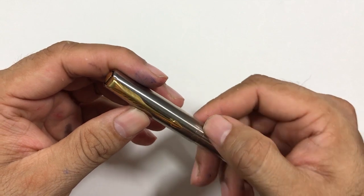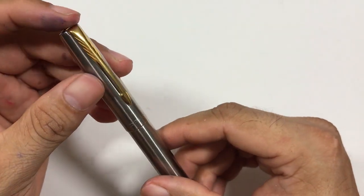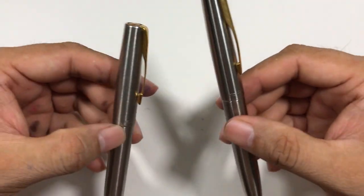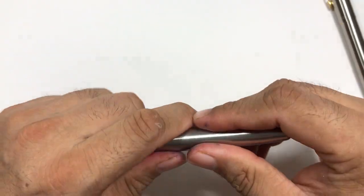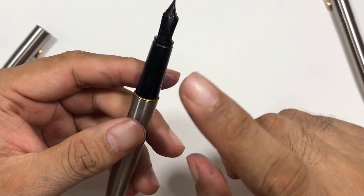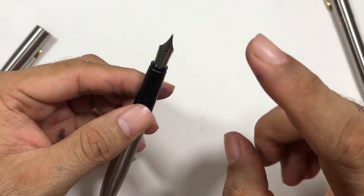The other thing that I don't like about this pen is its nib unit. So I'll open this pen. It has a plastic grip section and a plastic feed, steel nib.